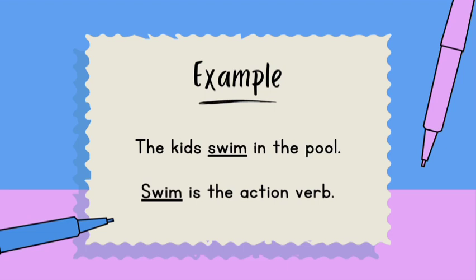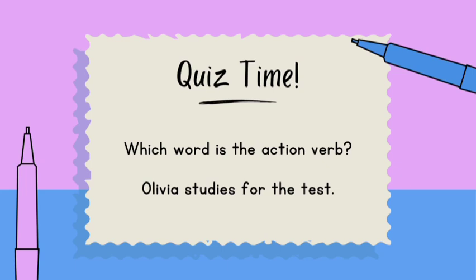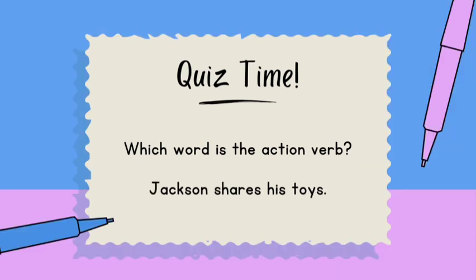'The kids swim in the pool' — 'swim' is the action verb. Now, which word is the action verb? 'Olivia studies for the test.' Which word is the action verb? 'Jackson shares his toys.' Hope you guys learned something new!